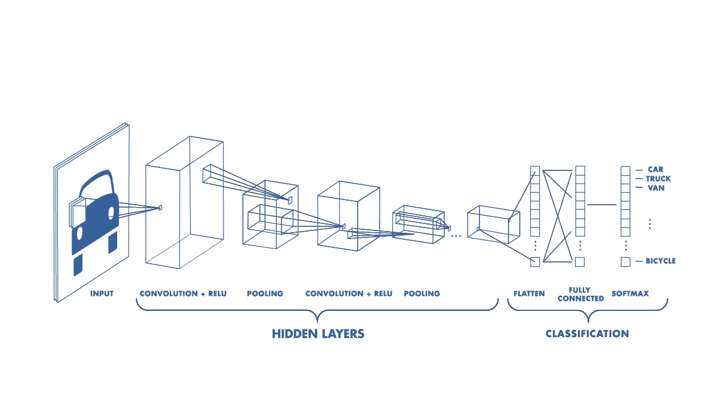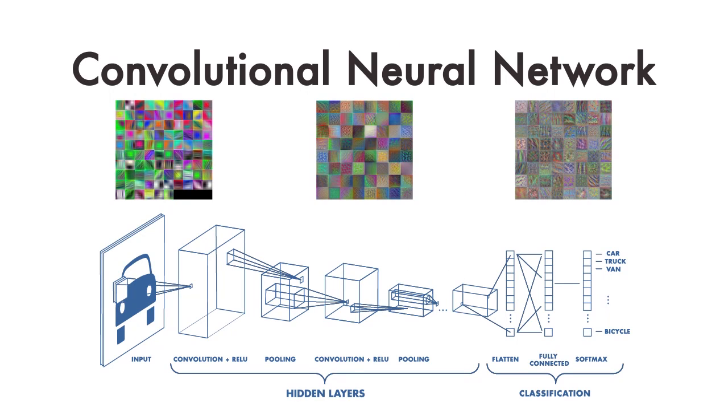This helps simplify the following layers and reduces the number of parameters that the model needs to learn. Now let's pull it all together. Using these three concepts, we can configure the layers in a CNN. A CNN can have tens or hundreds of hidden layers that each learn to detect different features in an image.